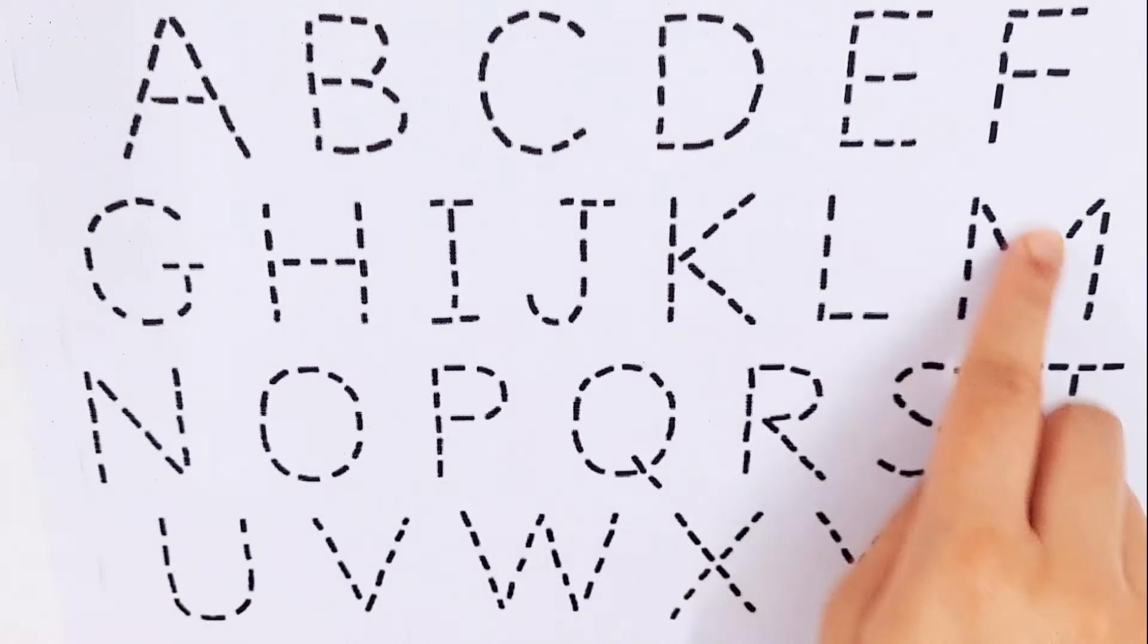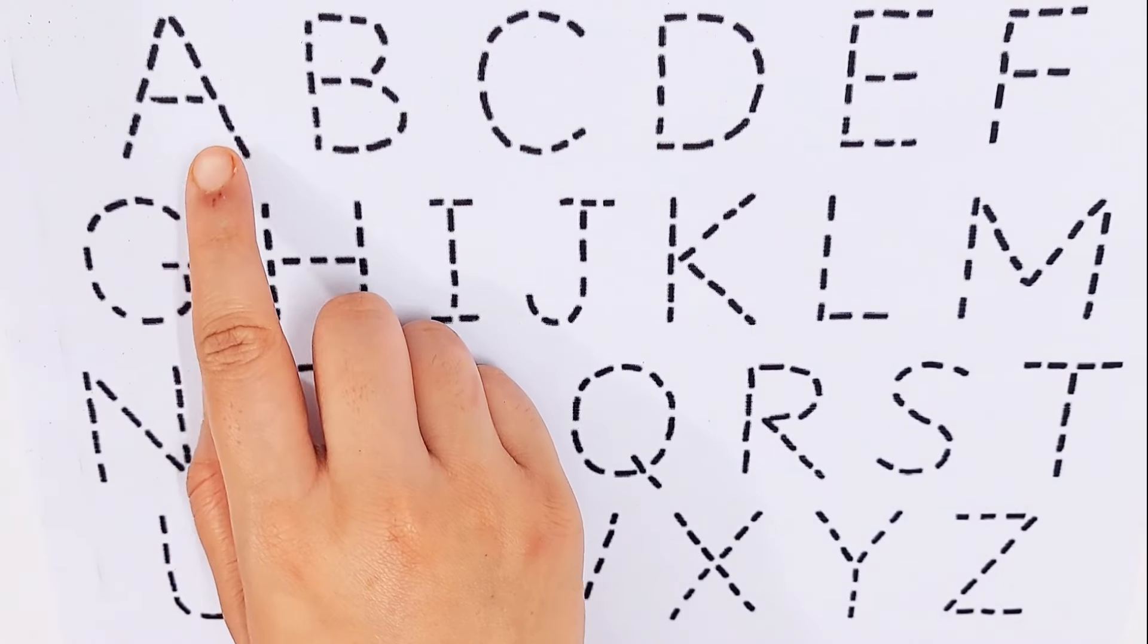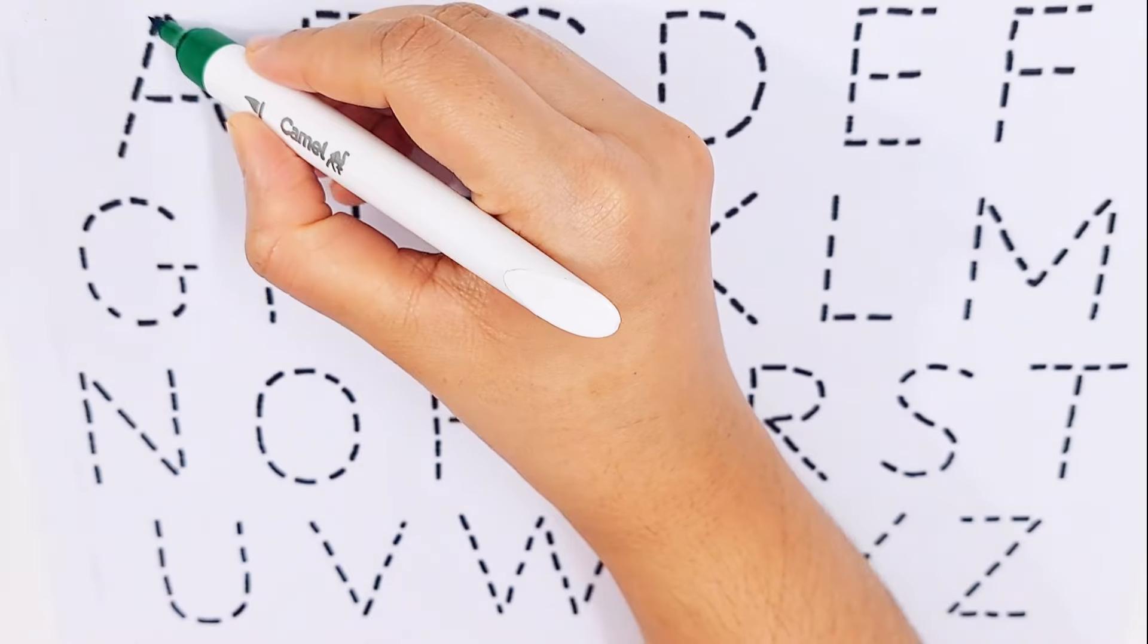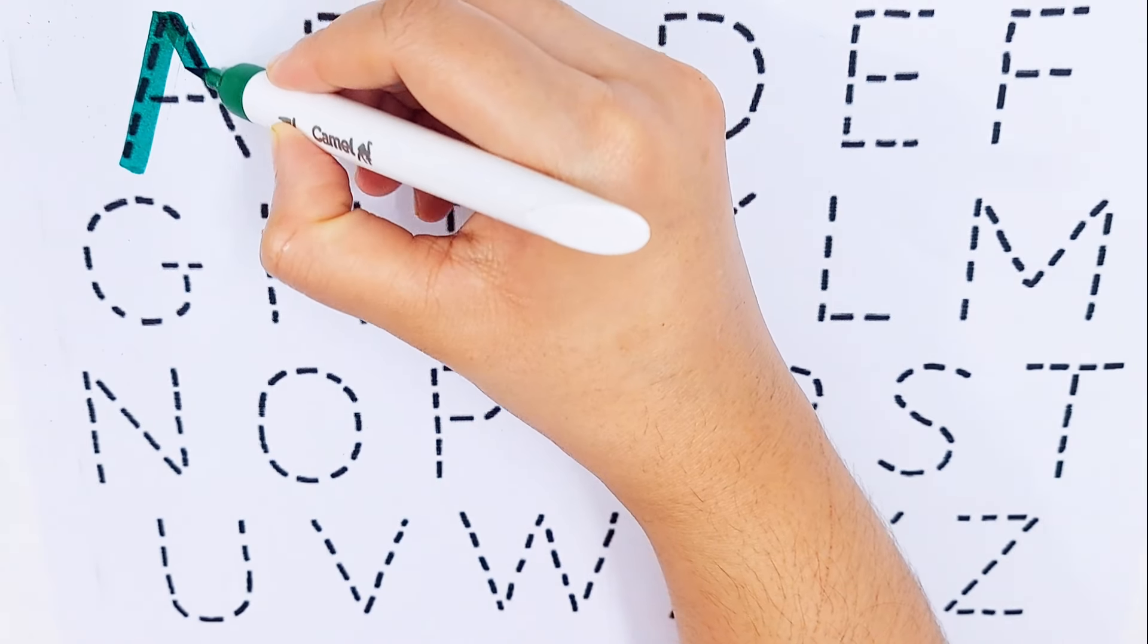Today we'll try to learn some alphabets: A, B, C, D, E, F. A, A for arrow.